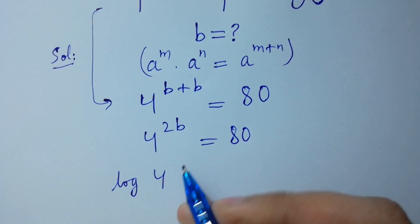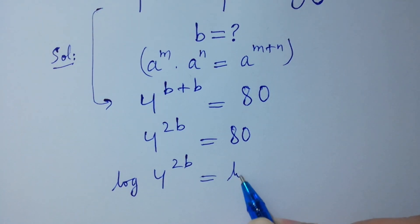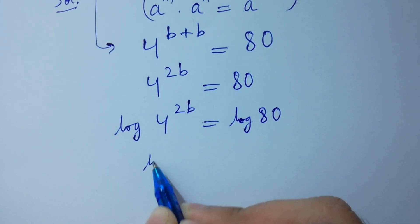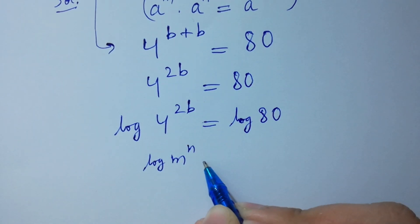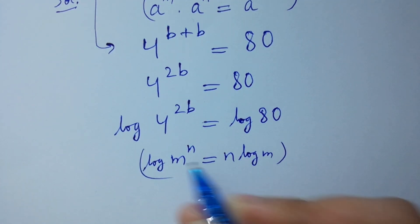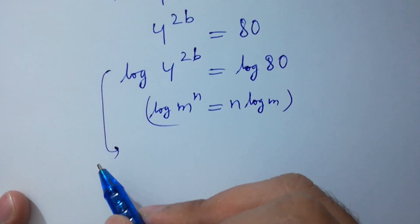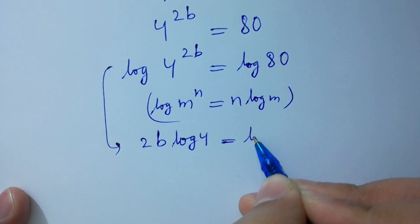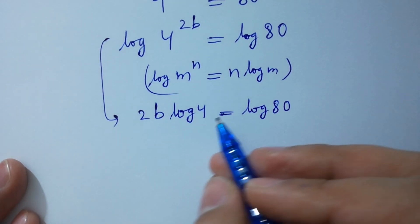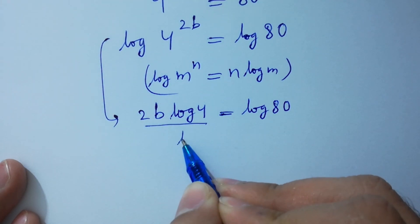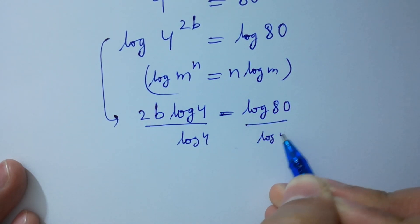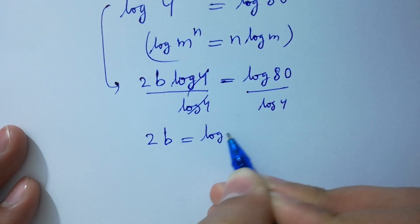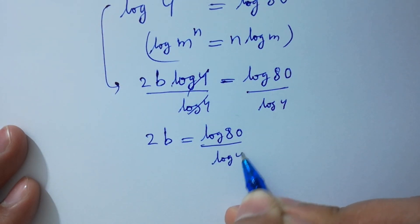Log of 4 to the power 2B equals log 80. Since log m to the power n equals n log m, we have 2B log 4 equals log 80. Now let's divide by log 4 on both sides. Log 4 and log 4 will be cancelled, so 2B equals log 80 over log 4.